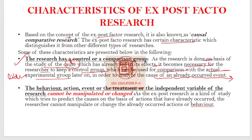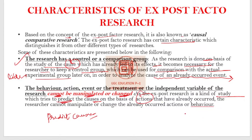Second characteristic: the behavior, action, event, treatment, or independent variable of the research cannot be manipulated or changed. There is no manipulation — you cannot change the situation. Ex post facto research is a kind of study which tries to predict the cause on the basis of actions that have already occurred. We are trying to predict the reason behind the situation, but we cannot manipulate it. We are trying to present it as it is.